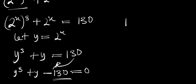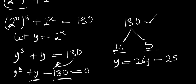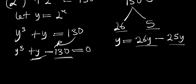Now let's work with 130. If you have 130, you can divide it into two parts: 26 and 5, since 26 times 5 is 130. Instead of this y term, we can write y as 26y minus 25y, so we are going to replace y with 26y - 25y.